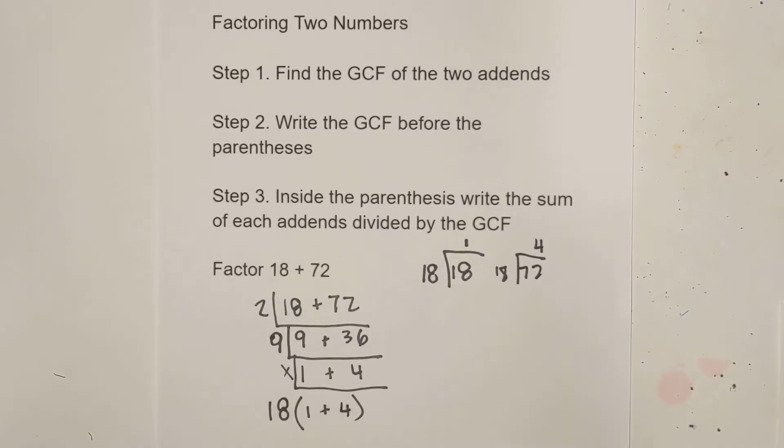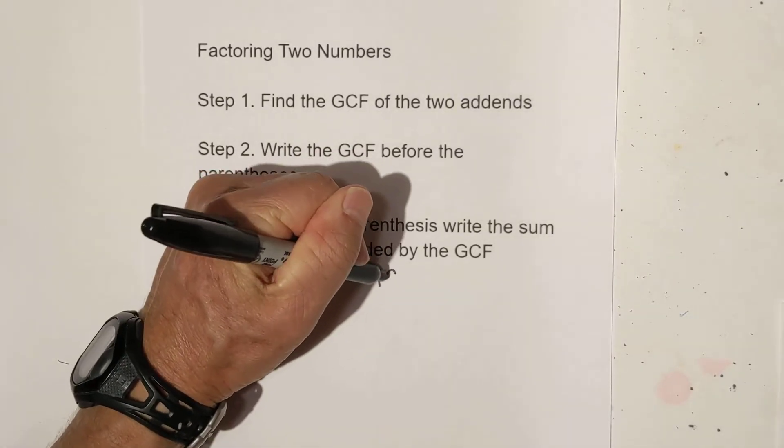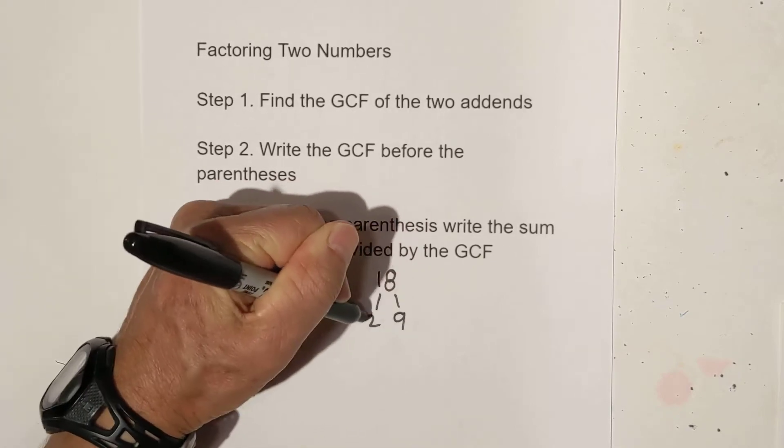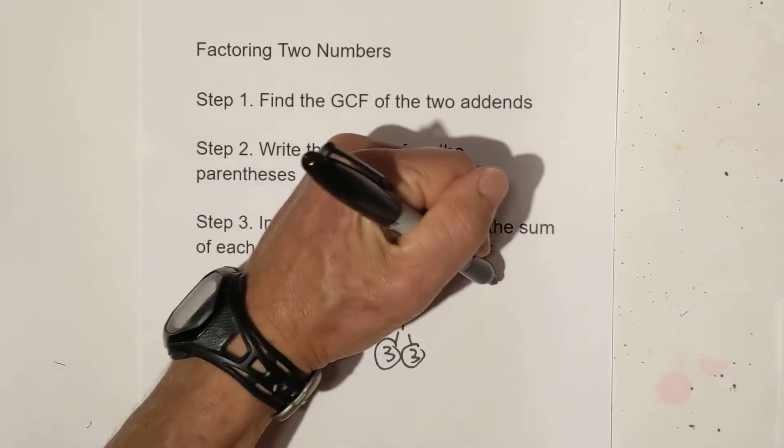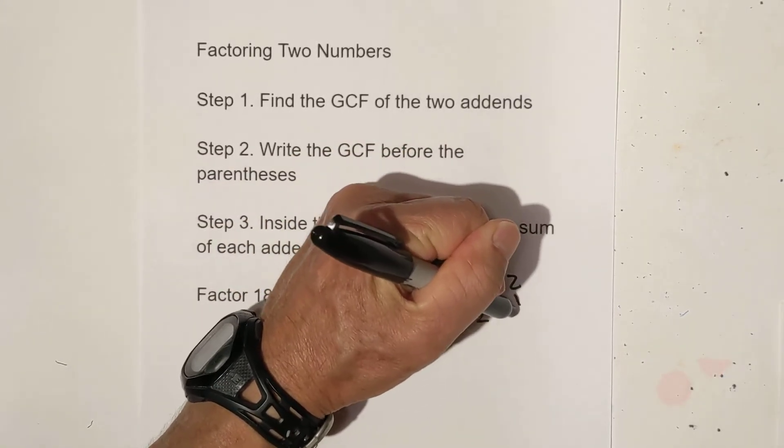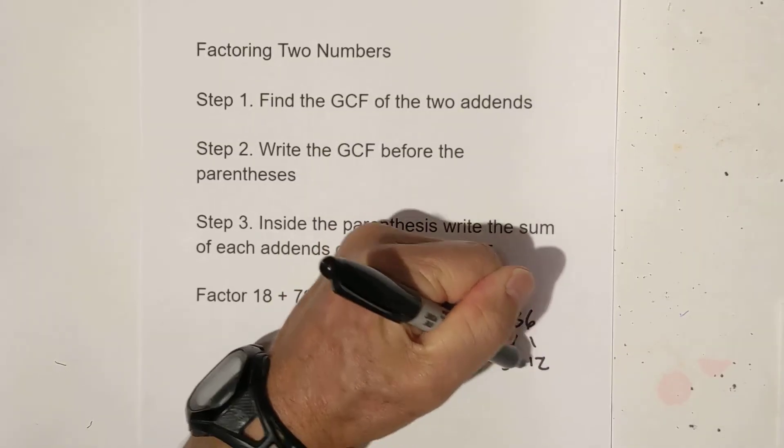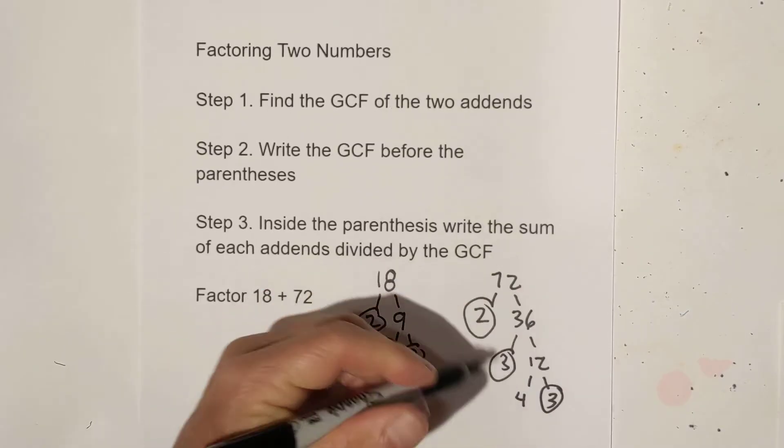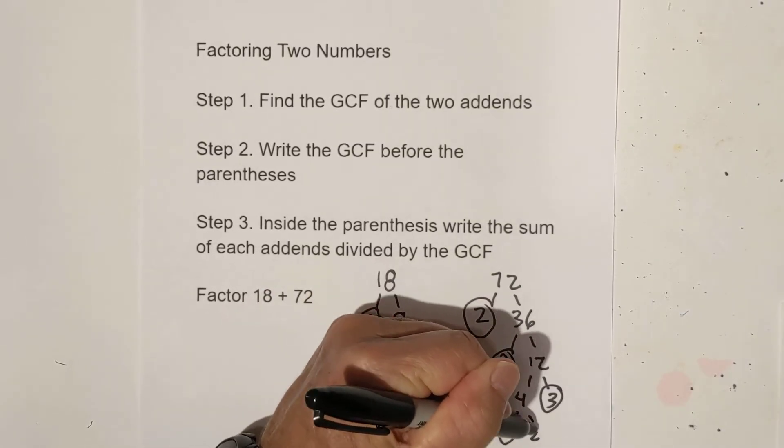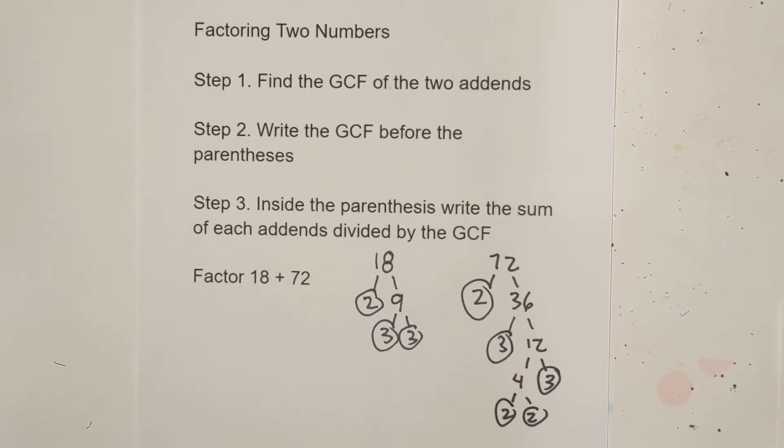Now I'm going to show you a different technique. If you don't like the sled, you can use a factor tree and you'll get the same answer. So let's create a factor tree. Two times nine circle the prime, three times three circle prime, and then 72, two times 36 circle the two. And then for 36, let's try three times twelve circle three because it's prime, four times three. Circle the three, it's prime, then two and two. I know I went through the factor tree really fast, but basically I created a factor tree for all the prime numbers.